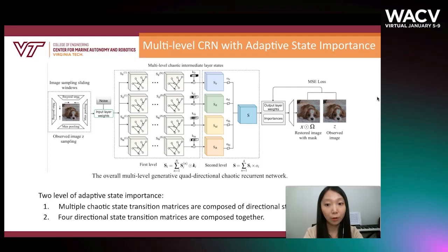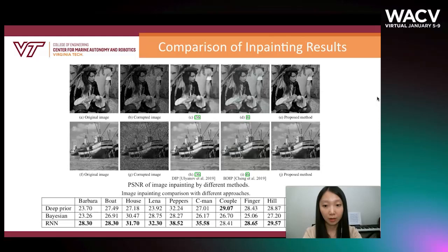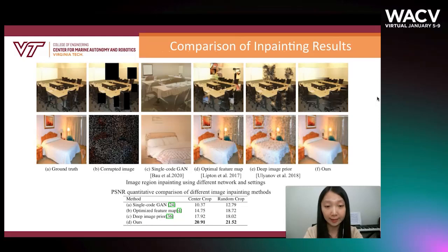Now we show some results. We tested on a widely used standard image inpainting dataset consisting of grayscale images with 40% of the pixels randomly dropped. From the output figure on the top, we can see that the inpainting result from our method is closest to the ground truth, as backed up by the quantitative result in the table. We further test the algorithm in large missing region cases. The first row shows central cropping and the second row shows random 80% missing data. Both qualitative and quantitative results of the proposed method outperform the benchmarks.